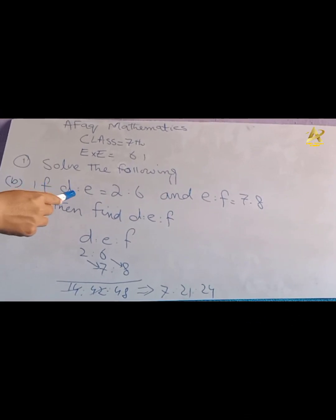Part B: If D ratio E is equal to 2 ratio 6, and E ratio F is equal to 7 ratio 8, then find D ratio E ratio F. Dear students, here we need to find D ratio E ratio F.